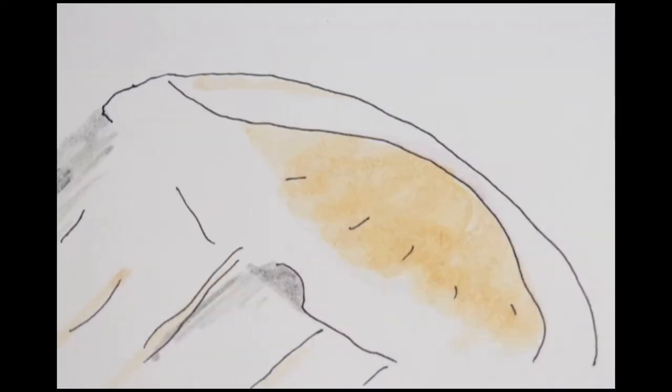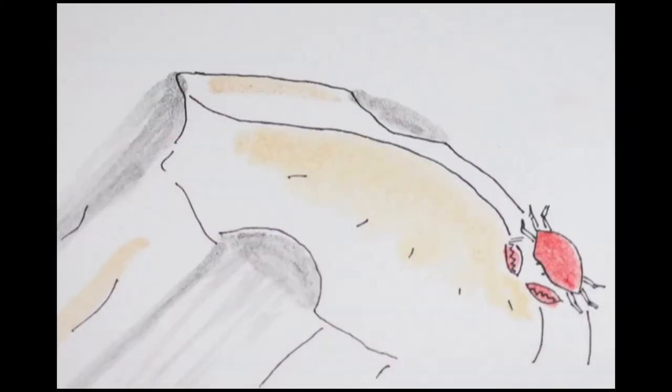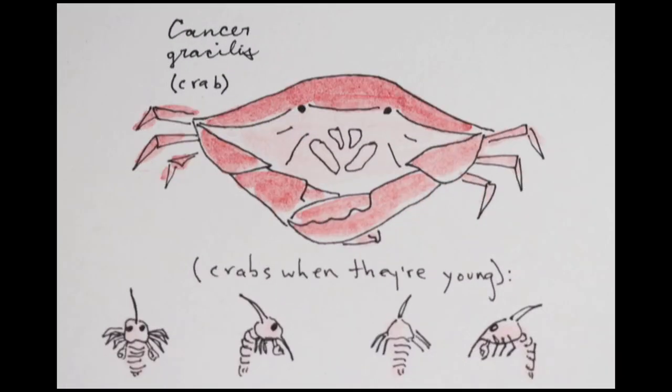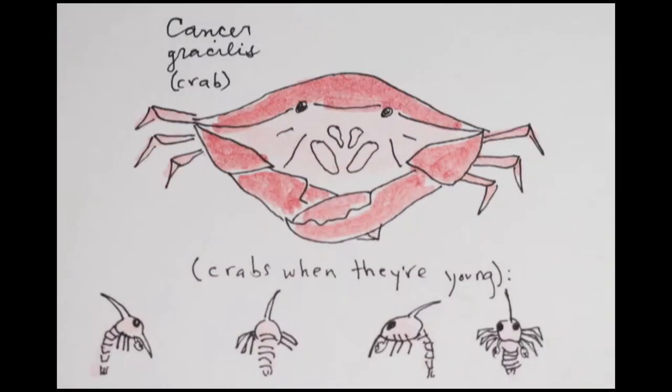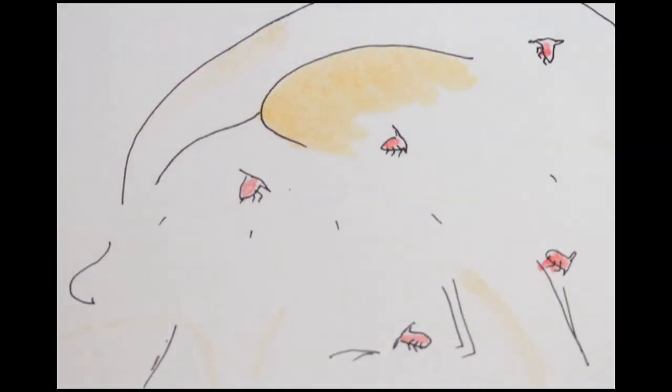So then the other thing that we realized is that some of these Thacelophoric had little crabs on them, cancer gracilis. What's happening is the crabs settle on the jellyfish. And there may be hundreds of them on one jellyfish. We counted more than 300 crabs on one jellyfish.